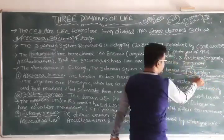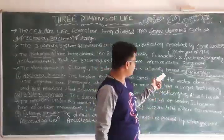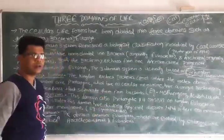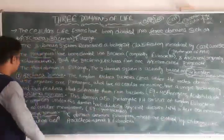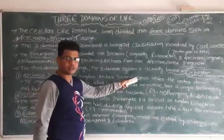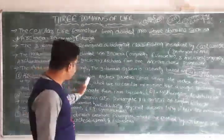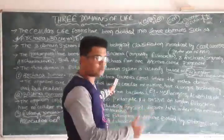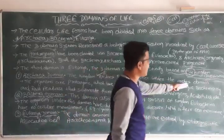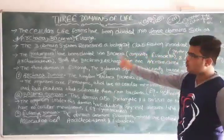This is the most important topic because after this we can describe the different types of classification. Listen carefully: the three domains are based on the six kingdom classification, which divides the three domains. Let us introduce the six kingdom system. The first one is the Archaea domain, and under the Archaea domain, the kingdom Archaebacteria comes.